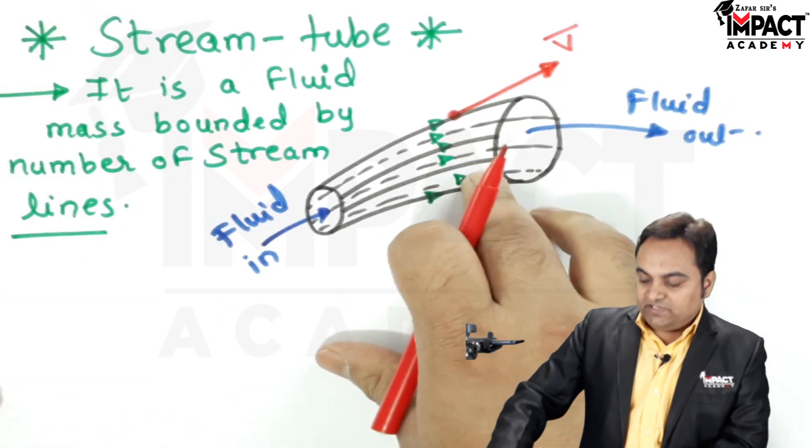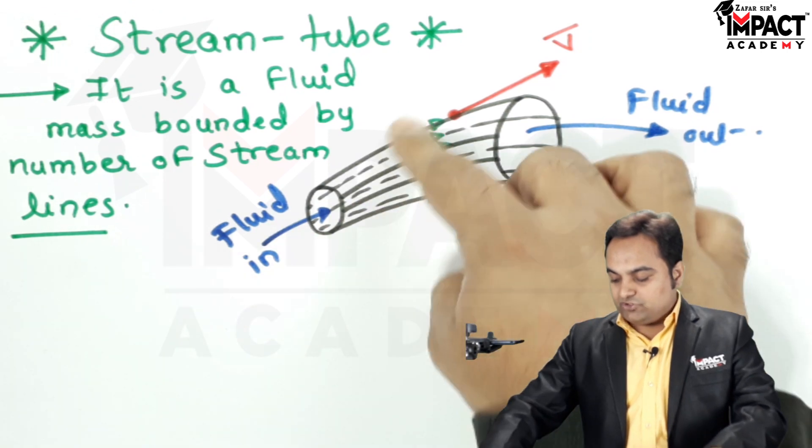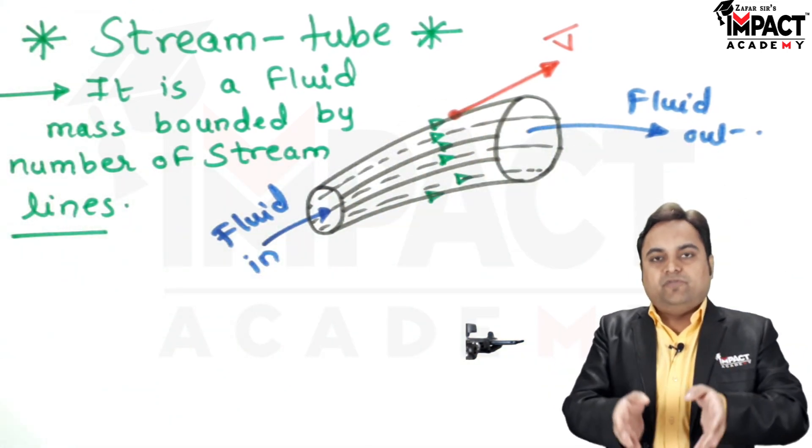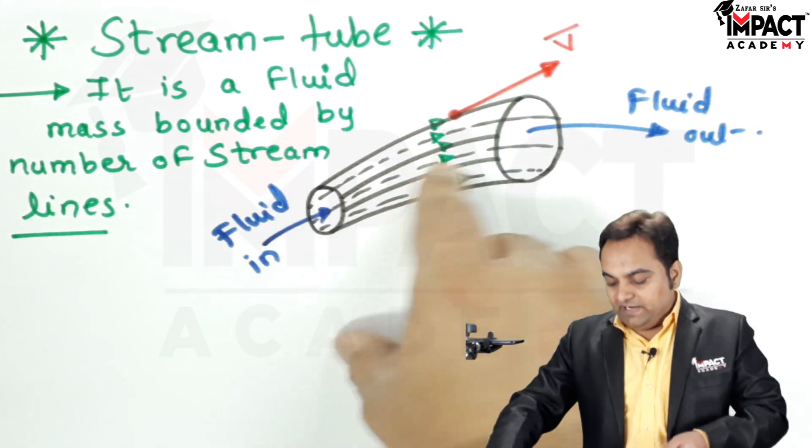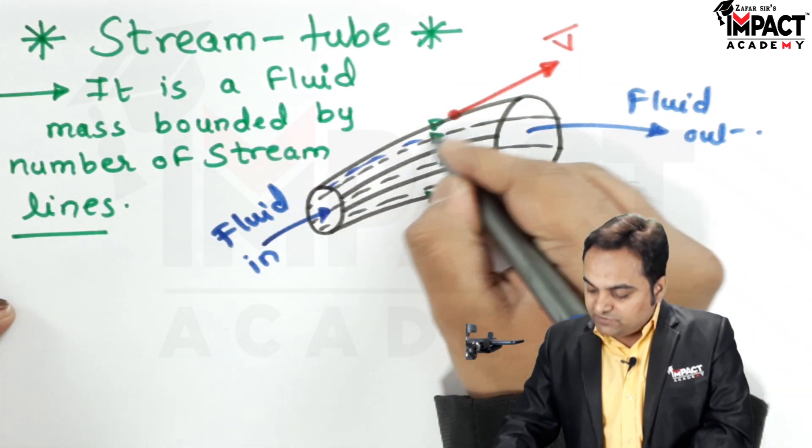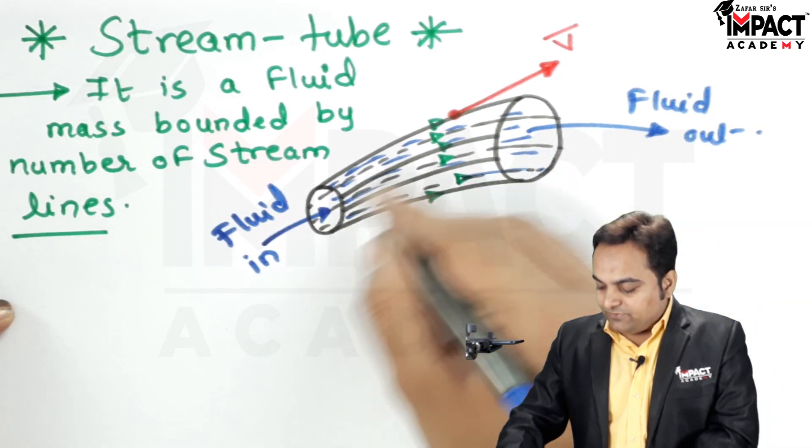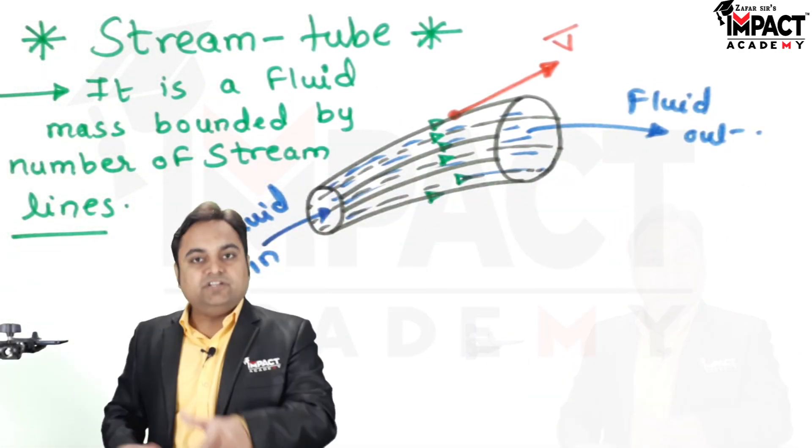So on various streamlines we are going to get various velocities at the particular instant and those streamlines when formed in the form of a tube and the fluid would be entering the tube and leaving the tube. So the fluid which is bounded by this streamlines means such a tube is called as a stream tube.